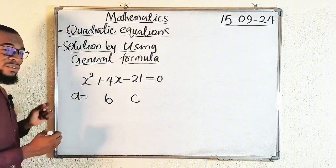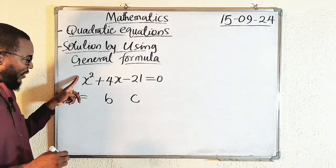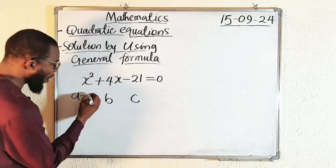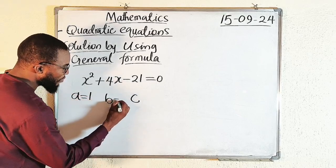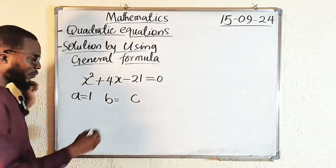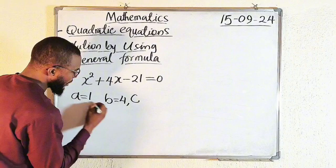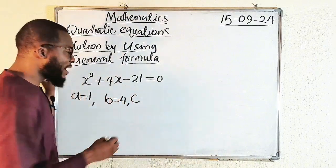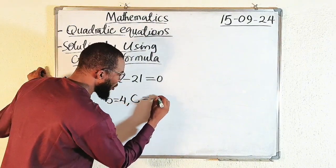A is always the coefficient of x squared, which is 1 naturally here. B is the coefficient of x, which we have here as 4. And lastly, the constant, we have it as negative 21.